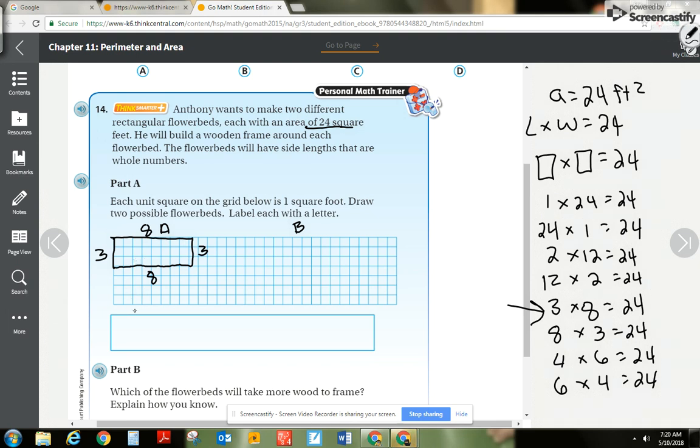Well, I know that this area is 24, and I might as well just find the perimeter now too. So it would be 3 plus 8 plus 3 plus 8. 3 and 8 is 11, 11 plus 3 is 14, 14 plus 8 is 22. Okay, so boom, got one of Anthony's flower beds done.